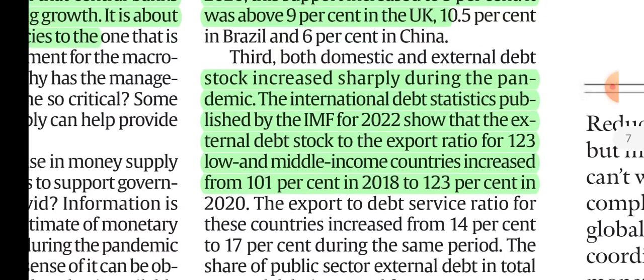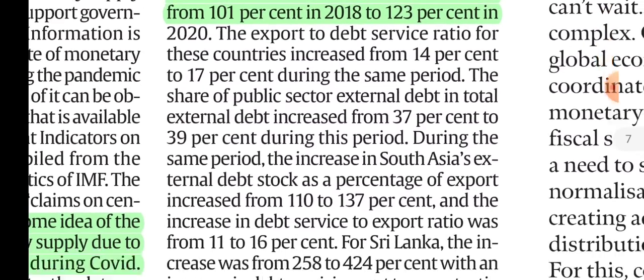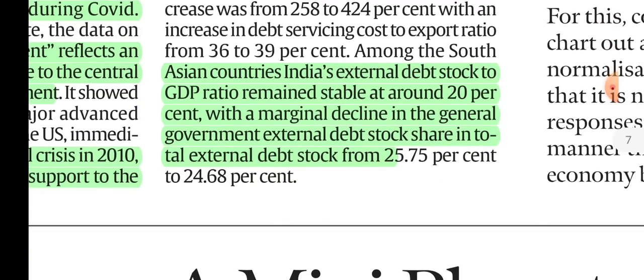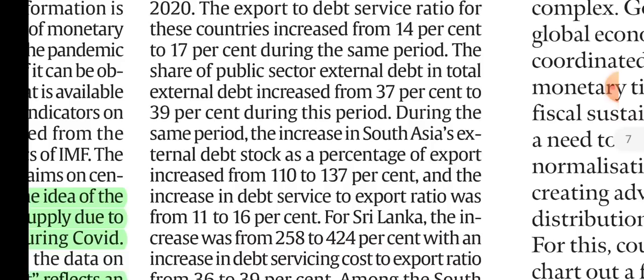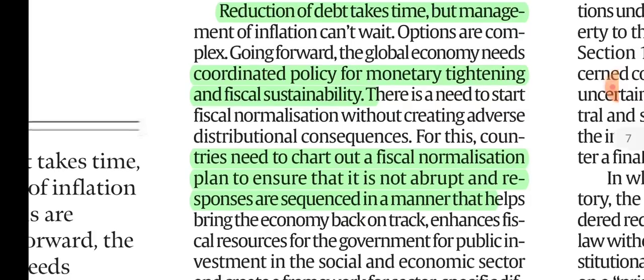Both domestic and external debt stocks increased sharply. India did not increase as much, but advanced countries increased significantly. IMF international debt statistics for 2022 show that the external debt stock to export ratio for 123 low- and middle-income countries increased from 101% to 123% in 2020. India's external debt stock to GDP ratio remains stable at around 20%.